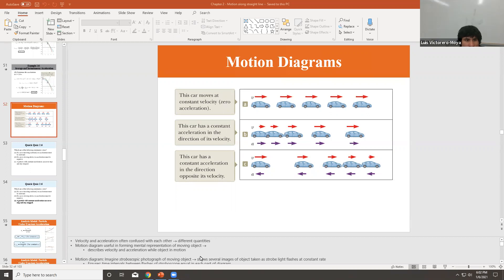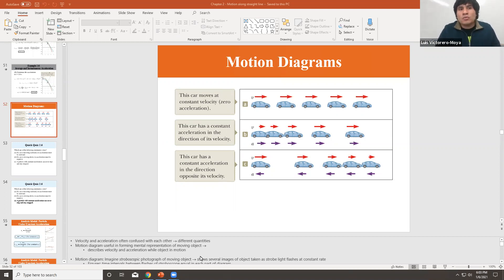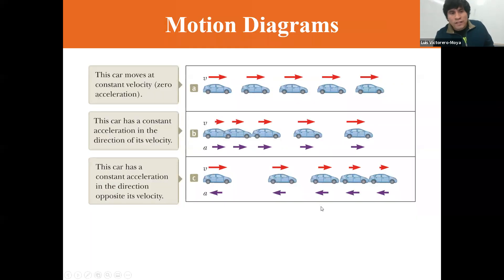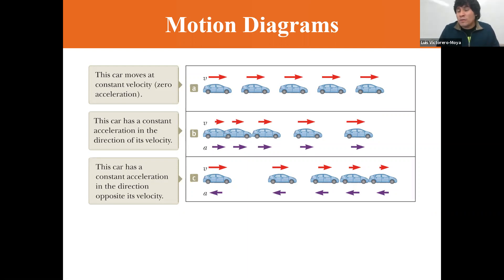Just to show you what motion diagrams are — we've been talking about them before when I showed you the position versus time graph and how the slope gives you the velocity. I finished last video by stating that the slope of a velocity versus time graph is the acceleration. Bear in mind that it's easier to discuss when the acceleration is constant or zero. We have three diagrams: a car moving at constant velocity with zero acceleration, a car with constant acceleration moving in the same direction as velocity, and a car that is slowing down where velocity and acceleration are in opposite directions.